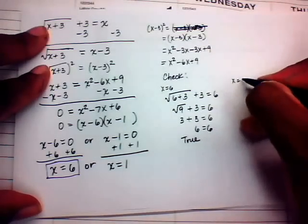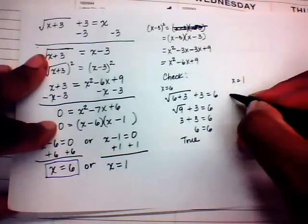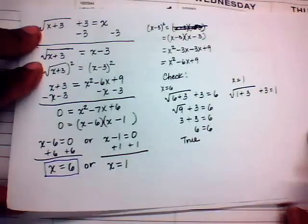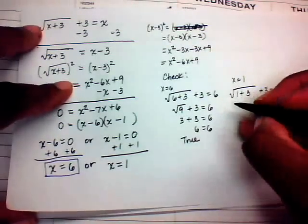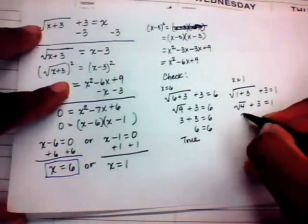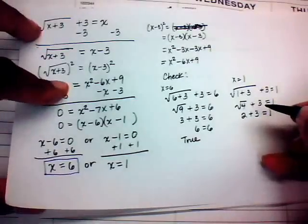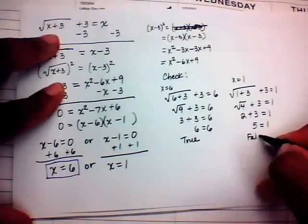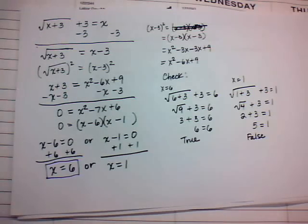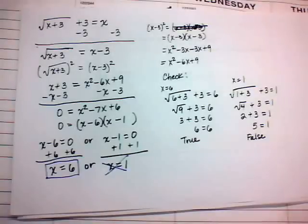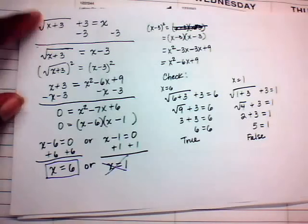For x = 1: √(1 + 3) + 3 = √4 + 3 = 2 + 3 = 5, which does not equal 1. That's a false statement, so x = 1 is an extraneous solution. Therefore, x = 6 is the only solution to this radical equation.